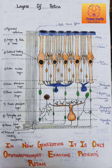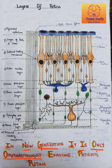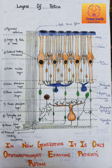Hey guys, welcome back to Crazy Meds. In this video, let's look at the mnemonic for the layers of the retina. The mnemonic is: 'In new generation it is only ophthalmologist examine patient's retina.' According to this mnemonic, the layers of the retina are depicted from the innermost layer to the outermost layer.